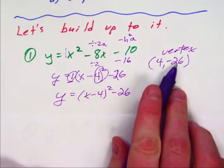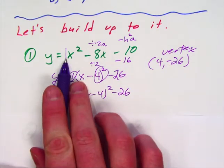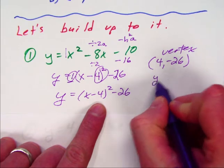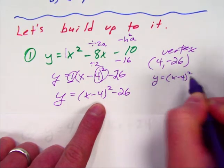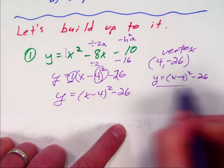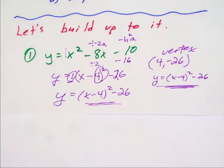So four comma negative 26. That was my vertex. And if I know the vertex, then all I need to do is steal the a value, which in this case was 1, and write it in graphing form, which would exactly be y equals x minus 4 squared, because we changed the x value. We keep this minus 26. Well, golly gee whiz, those two are a match, so we know that we did it right.